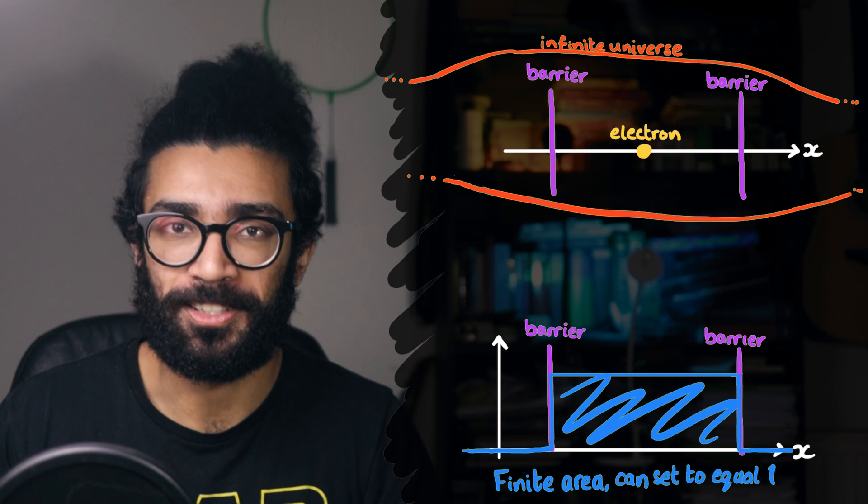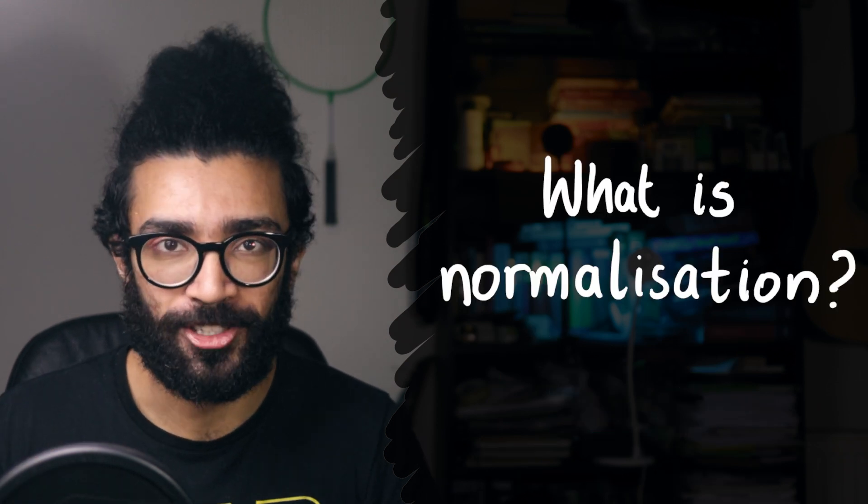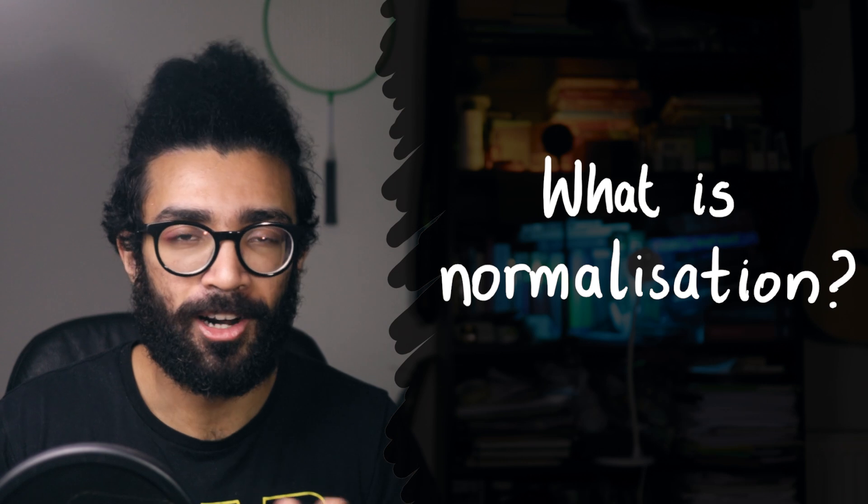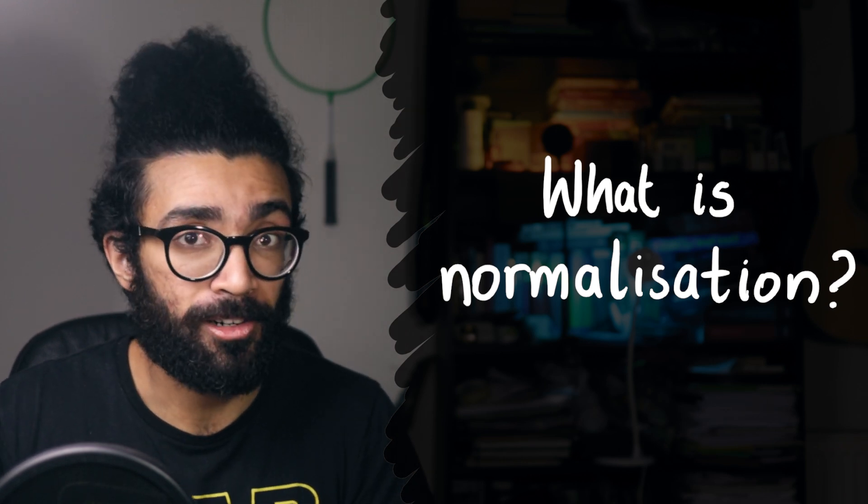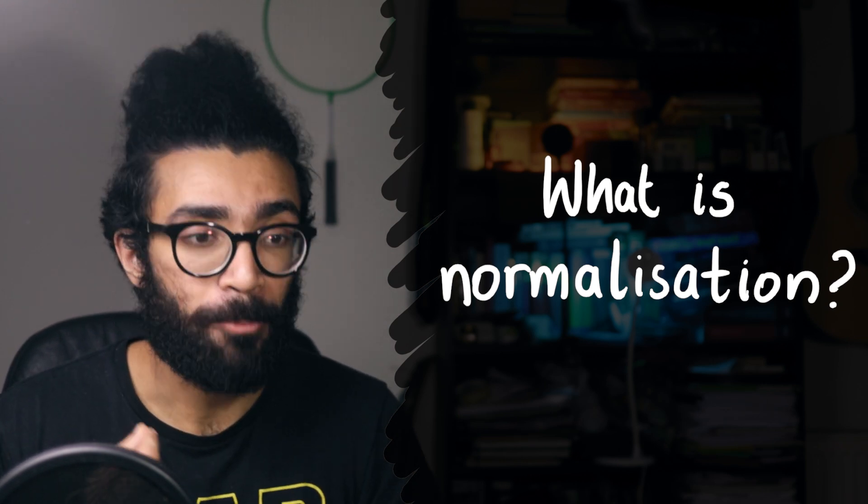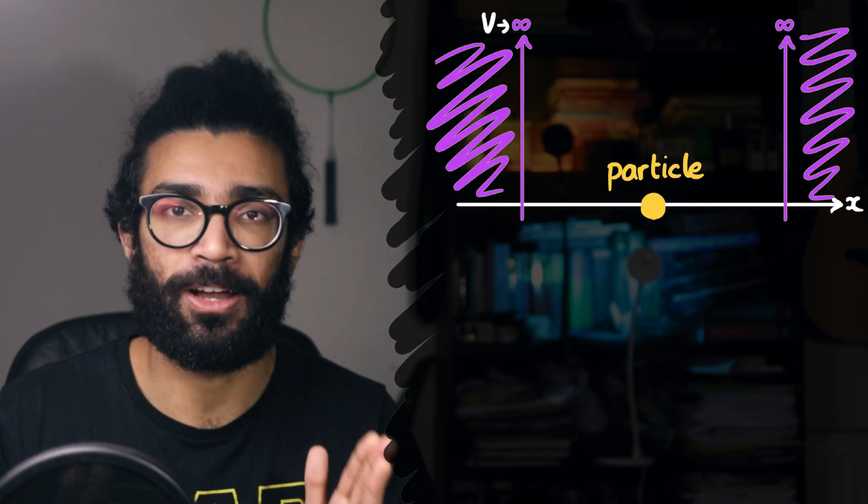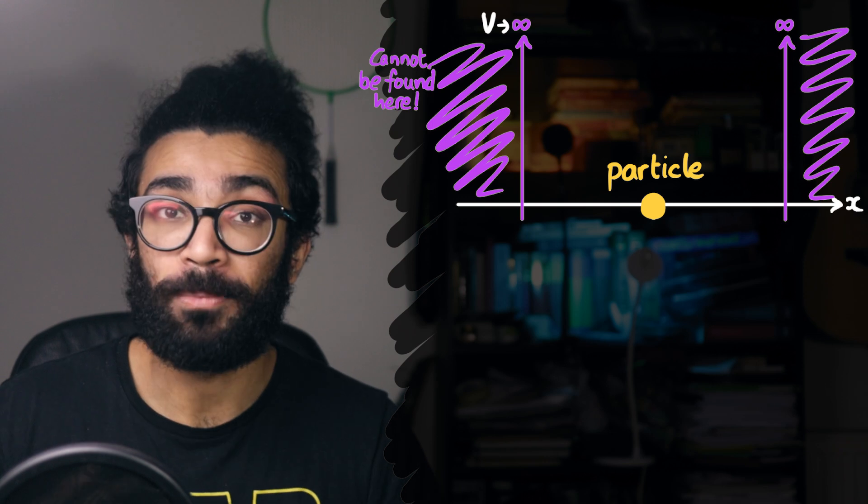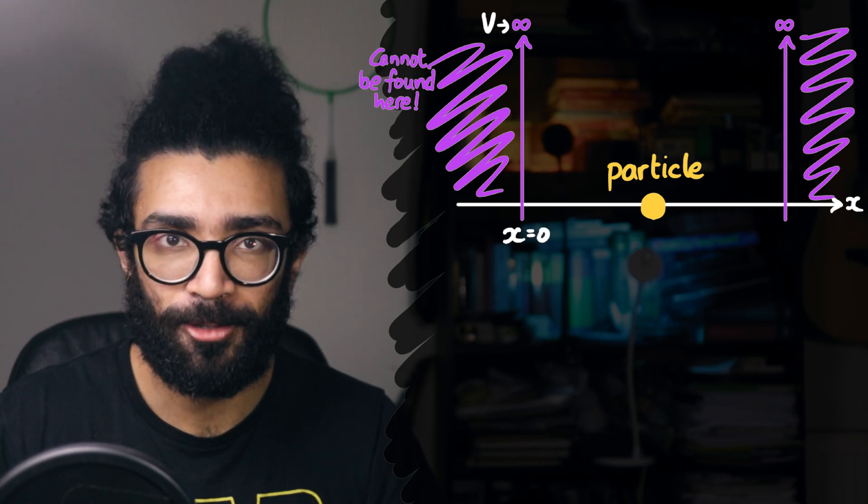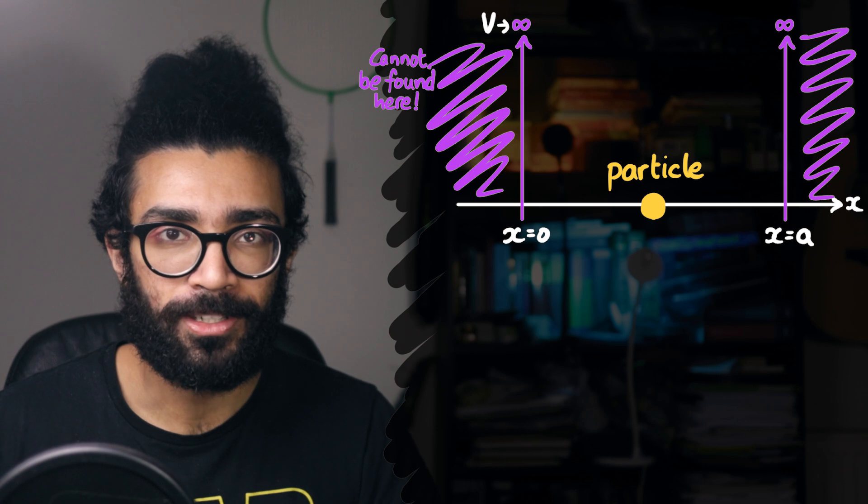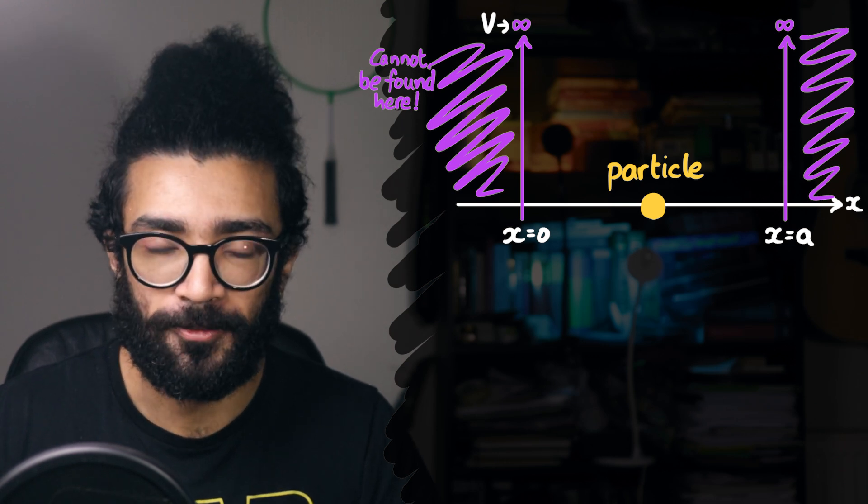Now, just to clarify here, we're not saying that an electron cannot exist in an infinite universe. We're just saying that in an infinite universe we can't have an electron where it's equally likely to be found anywhere along the universe. We need something to cause the area underneath our wave function squared curve to be finite, so we can set that equal to 1 with normalization. I think it's about time I finally answered the question, what is normalization? So to do that, let's consider once again the scenario that we looked at in my Schrodinger equation video.